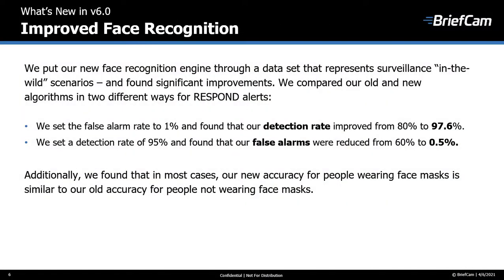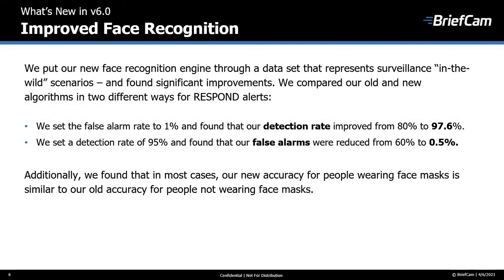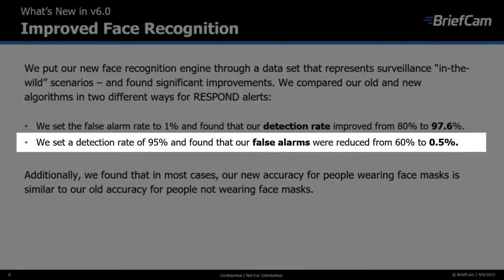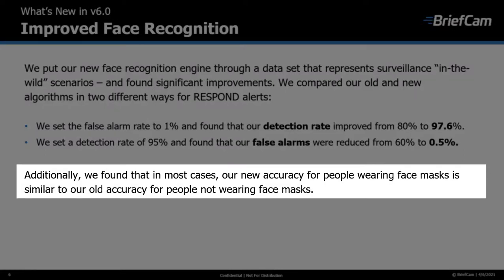Now let's look at our improved face recognition. In our constant endeavor to improve accuracy, we've released an enhanced face recognition engine and put it through a strict dataset, finding significant improvements. Comparing old and new algorithms for respond alerts: when we set the false alarm rate to 1%, our detection rate improved from 80% to 97.6%. When we set a detection rate of 95%, false alarms were significantly reduced from 60% to 0.5%.